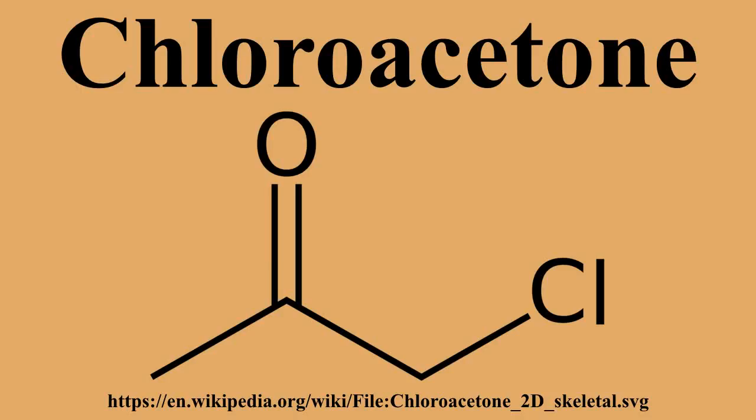Chloroacetone is a chemical compound with the formula CH3COCH2Cl. At STP it is a colorless liquid with a pungent odor. On exposure to light, it turns to a dark yellow amber color. It was used as a tear gas in World War I.